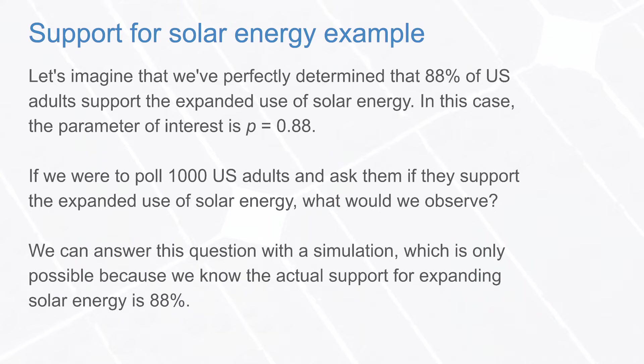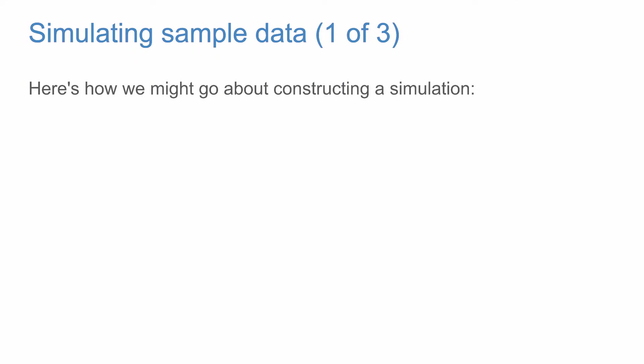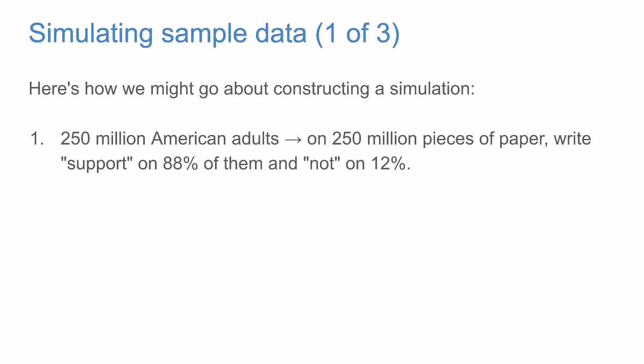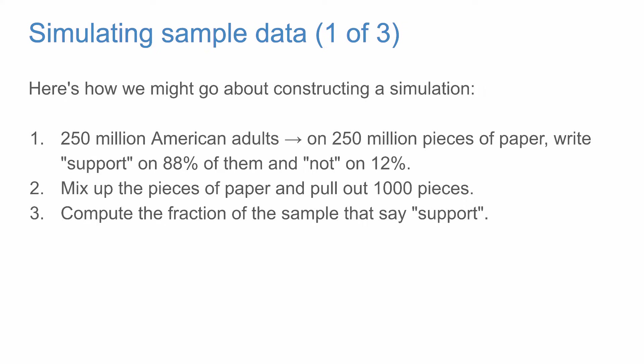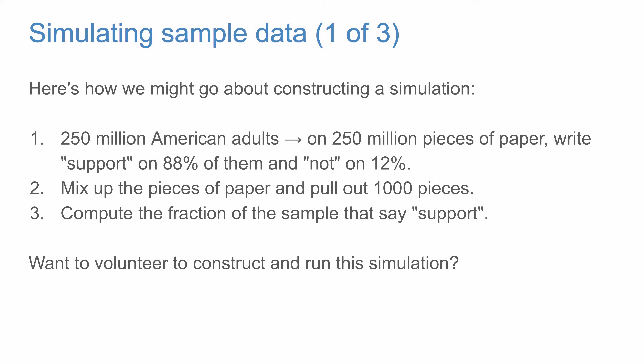We can answer this question with a simulation, which is only possible because we know the actual support is 88%. Here's how we might construct it: since there are 250 million American adults, we could take 250 million pieces of paper, write 'support' on 88% of them and not on the remaining 12%. Then we mix them up and pull out 1,000 pieces — like taking a simple random sample — and look at the fraction that say 'support.' This would be pretty intense, so instead we use a computer.